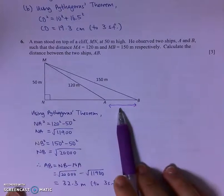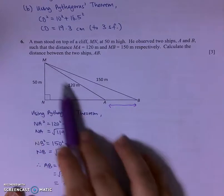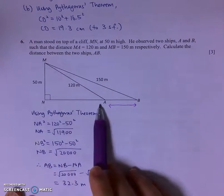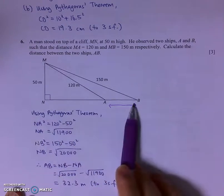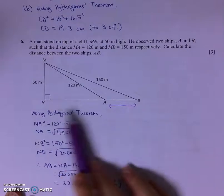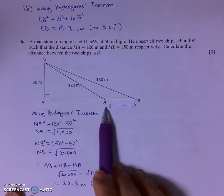So I would have to make use of the two right-angled triangles that I have to find the length of NA and NB separately before I take NB minus NA to find the length of AB.